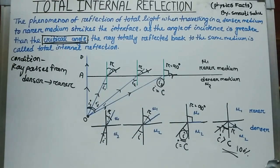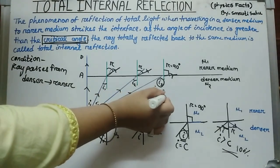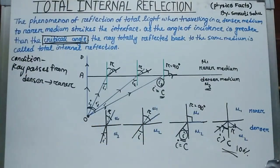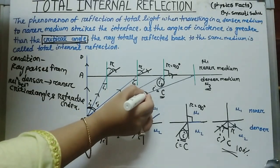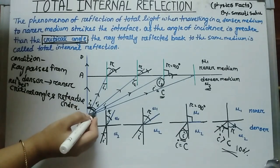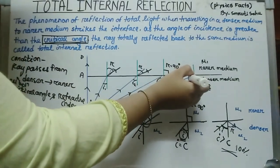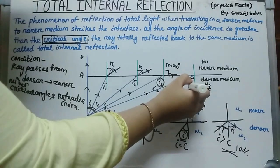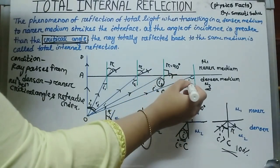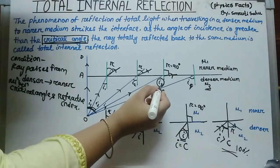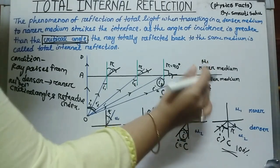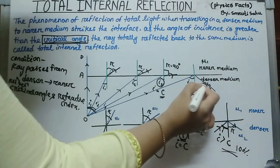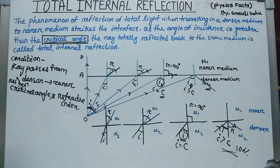Now we determine the relation between the critical angle and the refractive index. Take another incident ray with angle I4, where I4 is greater than I3 and greater than the critical angle. In this condition, the ray is reflected back to the same medium — no refraction occurs.